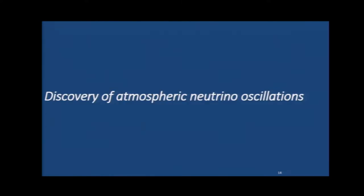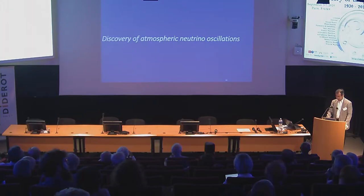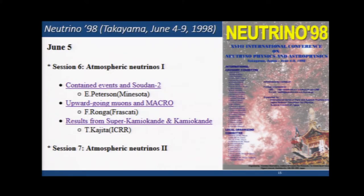Now I want to move on to the discovery of atmospheric neutrino oscillations. Super-Kamiokande began data taking on April 1996. Usually it took some time to develop the analysis software and check everything. For us, it took almost two years to finish the initial round of analysis. We presented our initial conclusive result at the Neutrino conference at Takayama, June 1998.